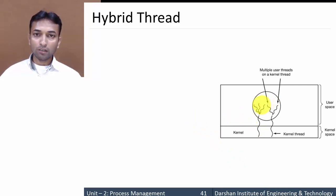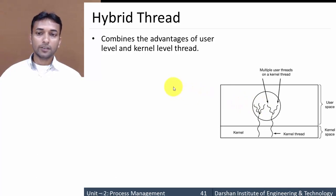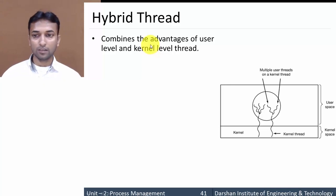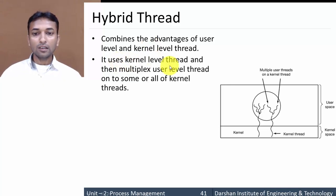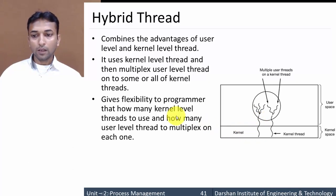Now let's move to hybrid threads. If you want to combine the advantages of both user level and kernel level threads, we use hybrid threads. It combines the advantages of both, using kernel level threads and then multiplexing user level threads onto some or all of the kernel. In a hybrid thread, some portion of the thread is in user space and some portion is in kernel space.